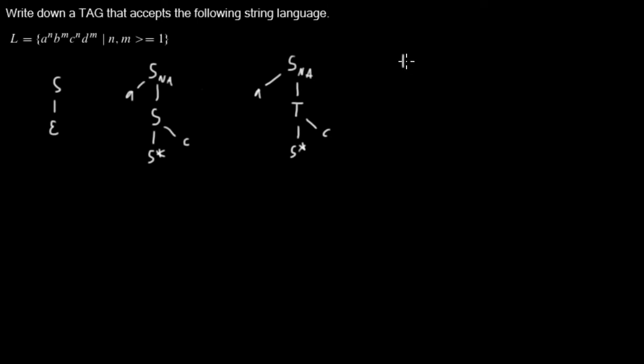now I add another auxiliary tree, which adds my B's and D's and has, of course, the footnote.